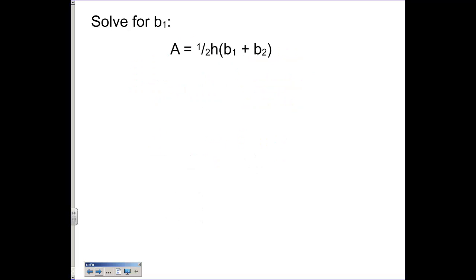Solve for base 1. Base 1 is inside the parentheses, so I'm going to have to undo that last. First thing I'm going to do is get rid of this 1 half. So I'm going to times by 2, times by 2. So I have 2a is equal to the height times base 1 plus base 2.